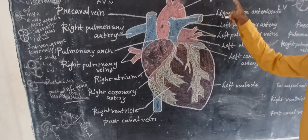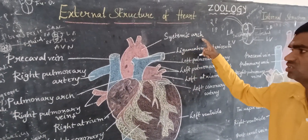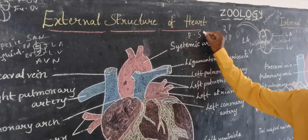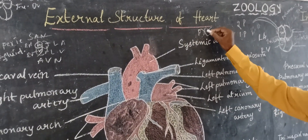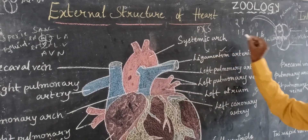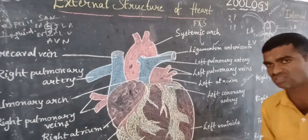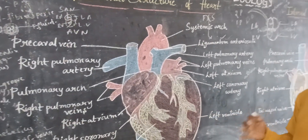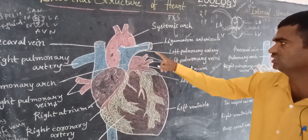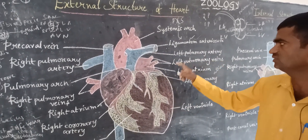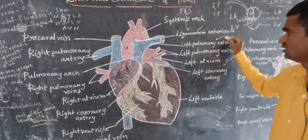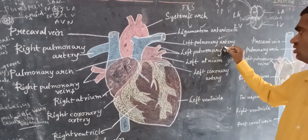Looking at the diagram: the systemic arch carries oxygenated blood. Where the pulmonary arch and systemic arch divide or connect, that part is called the ligamentum arteriosum, which is the remnant of the ductus arteriosus. There is also the left pulmonary artery, which carries deoxygenated blood, and the left pulmonary veins, which carry oxygenated blood.